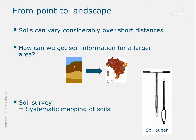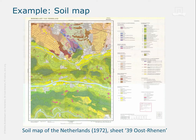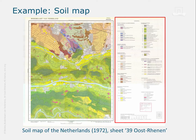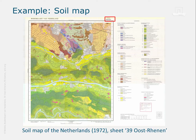From a soil survey you can make a soil map, like the one here that shows the soil types around Wageningen in the Netherlands. You can see the typical elements of a soil map. The soil units are shown in different colors and are listed in a legend beside the map. Other important features are the topographic map in the background, the name of the map sheet and the scale of the map. Usually there is an annex too with more information on soil use and management.